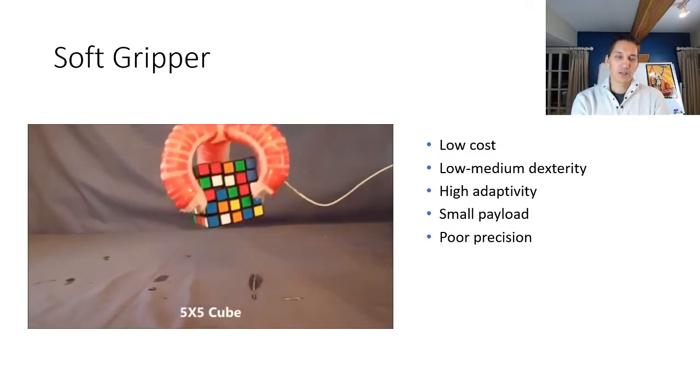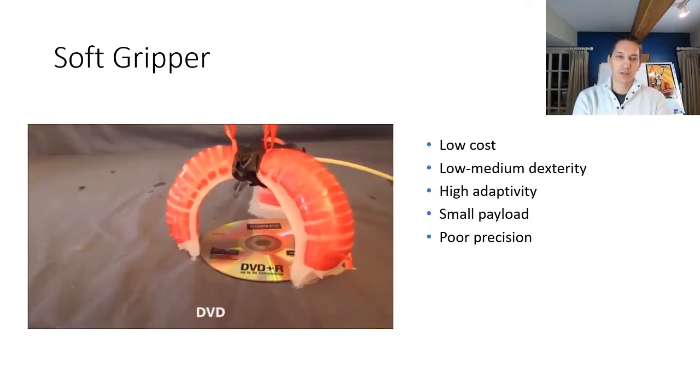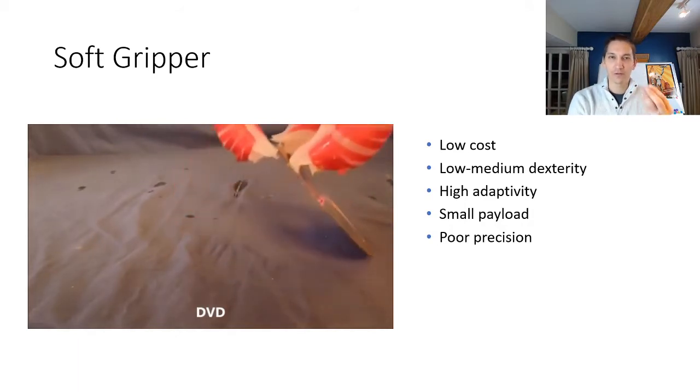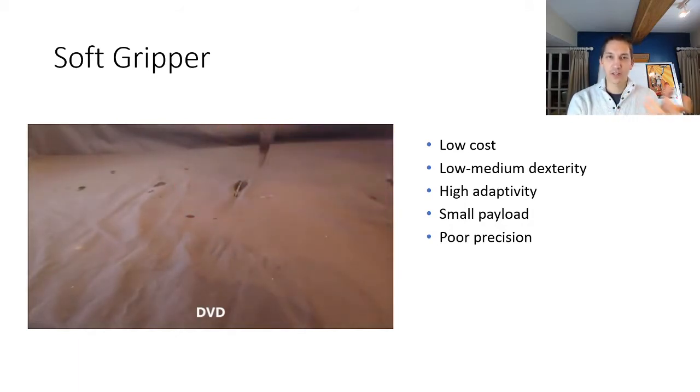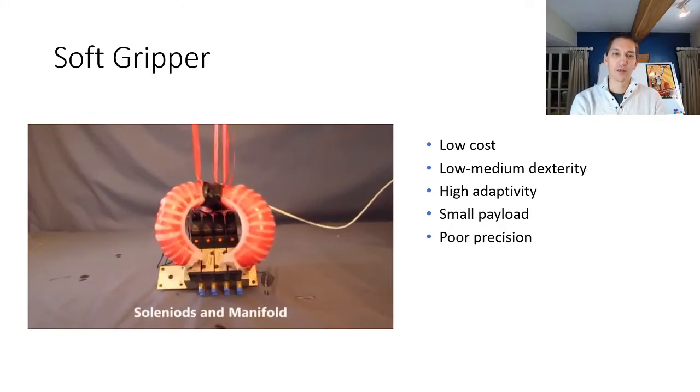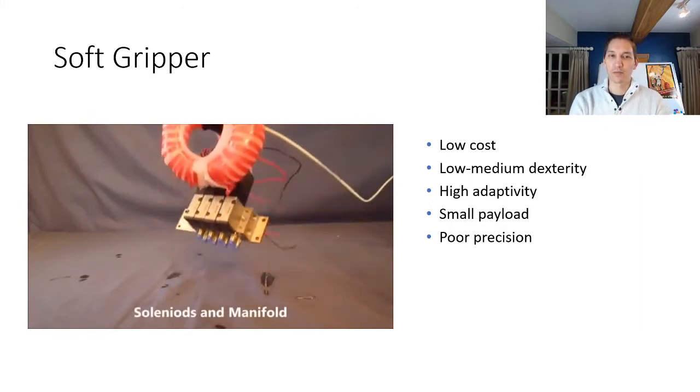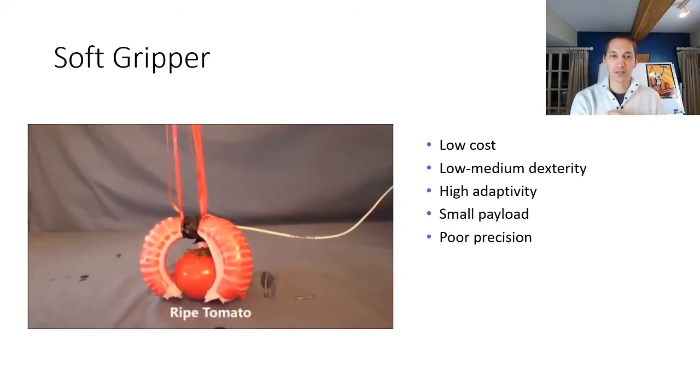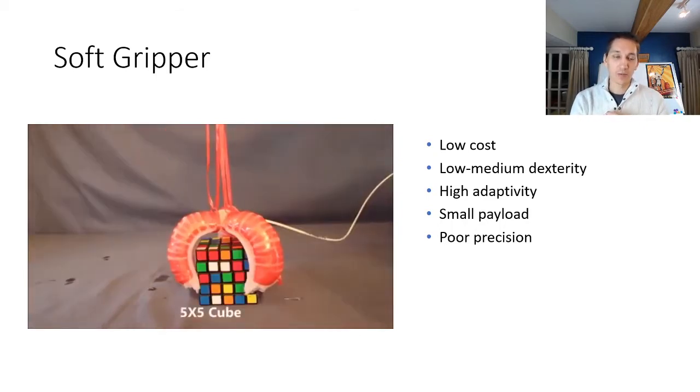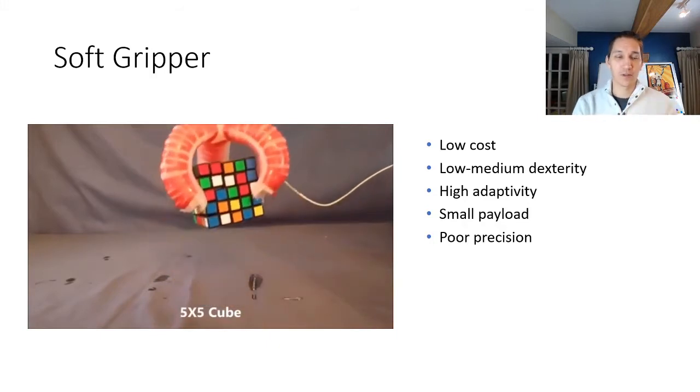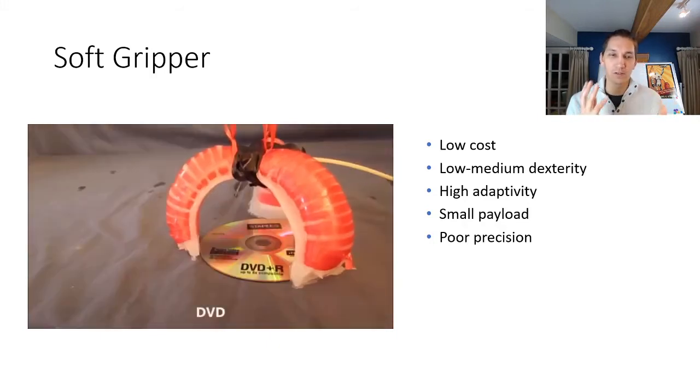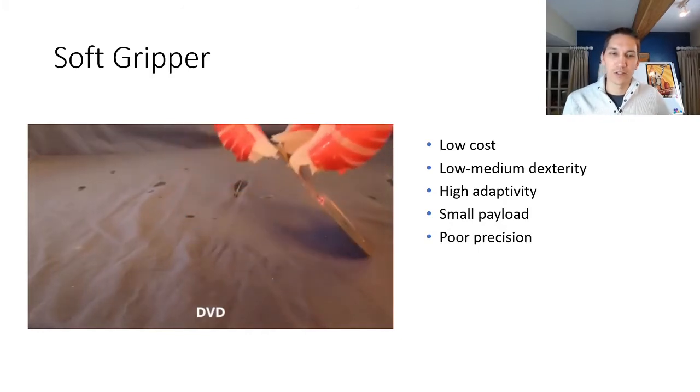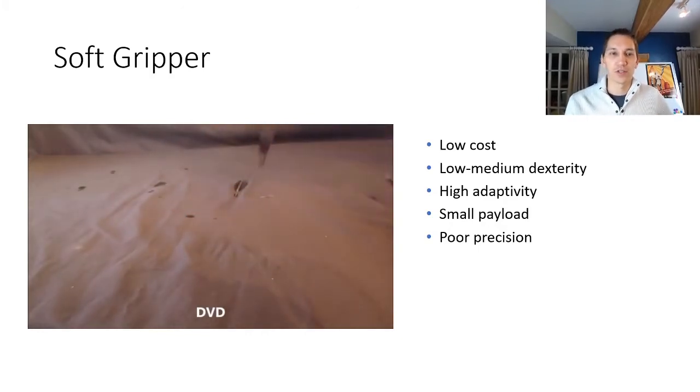Recently people have been looking into soft grippers, which are basically these empty chambers of rubber that are filled with air, and by changing the pressure of air you can get these fingers to wrap around things and grab them. They're extremely adaptable and they're also soft, and they don't damage things, but they are hard to model and they have relatively poor precision. So you have to trade off the adaptivity and the delicateness of your touch with the lack of precision that you might have.